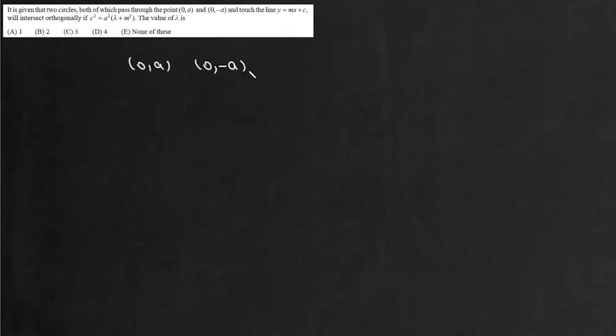The question states that two circles, both of which pass through the points (0, a) and (0, -a), touch the line y = mx + c, and will intersect orthogonally if c² = a²(λ + m²). We need to find the value of λ.